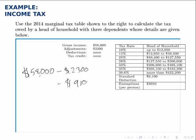So we subtract off $9,100 for the standard deduction. For the exemptions, remember that each taxpayer gets an exemption for themselves and one for each dependent. Since this head of household has three dependents plus themselves, that's a total of four exemptions. So we subtract off the exemption amount times four. Once we subtract off those three categories, we find the taxable income is $33,100.